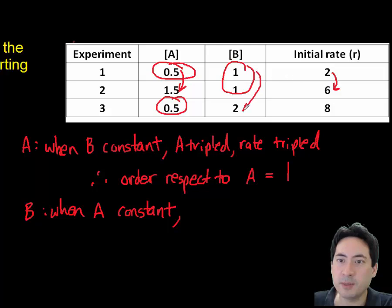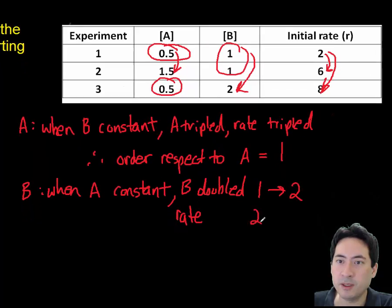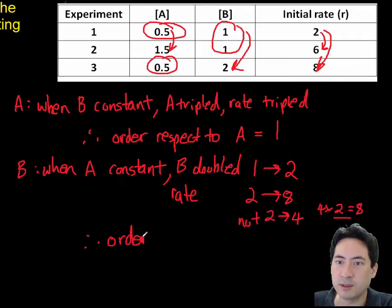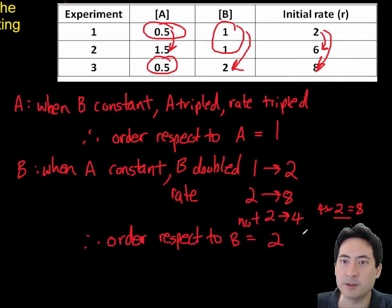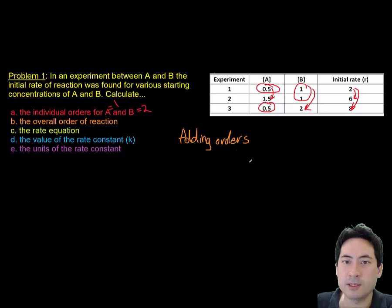Now let's look at B. Keep A constant in one and three. And so we double the reaction. We're quadrupling the rate. So that must have been to the power of two. That allows us to write out the overall rate. Then if there's a one and two, it would be three. And now we can write the overall rate equation there.